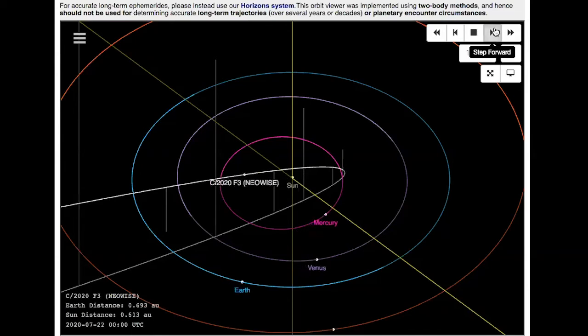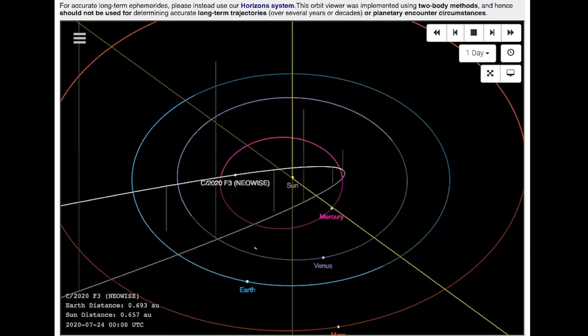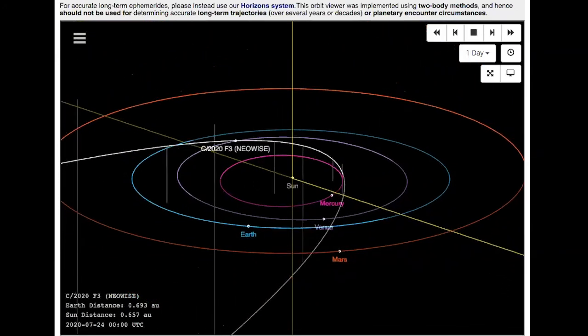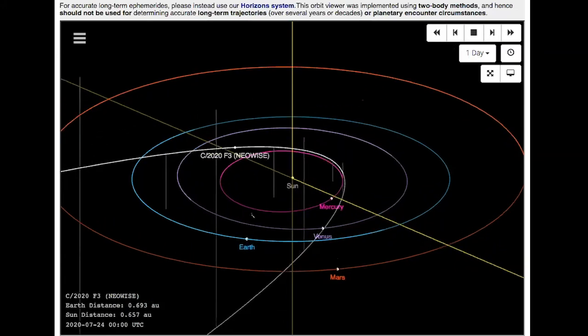So by the time we get to, looks like the 23rd here, we've reached our closest approach to the Earth. And you can see the comet is kind of passing right over top of the Earth.